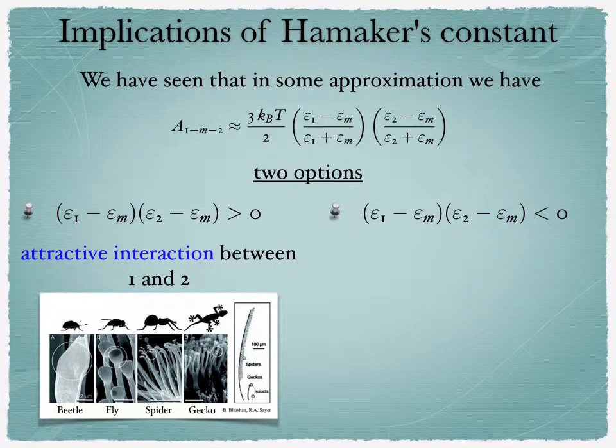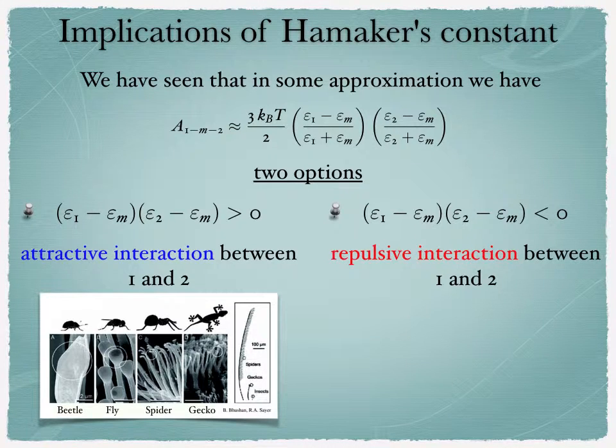Now there is another possibility, which is that (ε1 - εm) times (ε2 - εm) is less than zero. In that case, what happens is that you get repulsive interactions. This plays a crucial role when you've got colloidal mixtures.